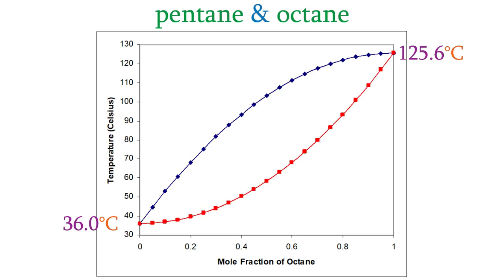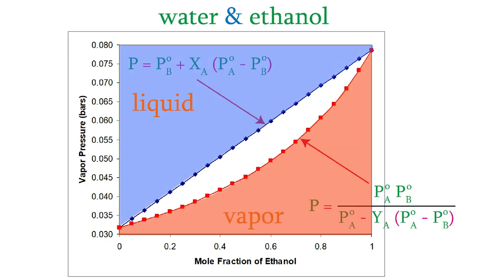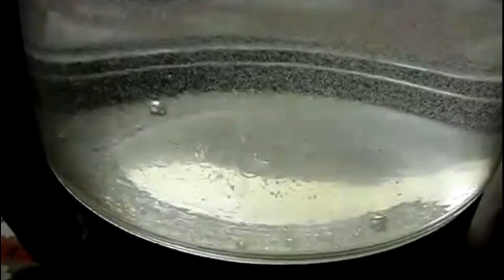We have vapor at higher temperatures and liquid at lower temperatures — the opposite of the pressure plot, where liquids appeared at higher pressures. The really interesting region is in the middle, where both liquid and vapor coexist. Unlike a pure substance, a two-component solution can boil over a range of temperatures. During a distillation, the solution begins boiling at one temperature and we can continue raising the temperature even before boiling completes. For a pure substance, the temperature doesn't rise until boiling is finished.